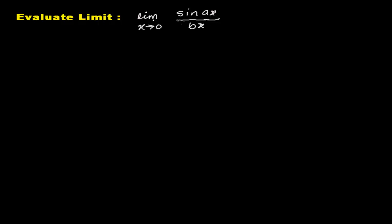Let's start now. Here's the question: limit as x tends to 0 of sin(ax) over bx. In this problem, if you just plug in the value of x, you'll get sin(ax) over bx.